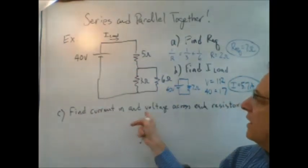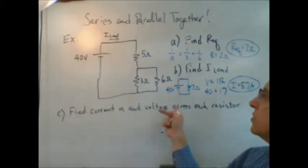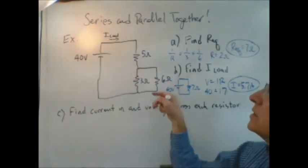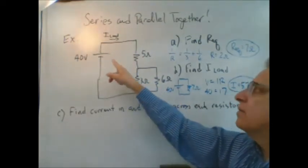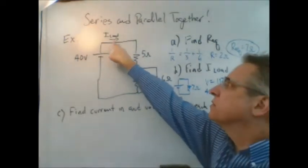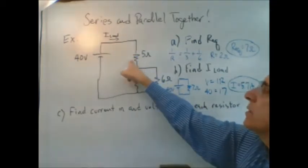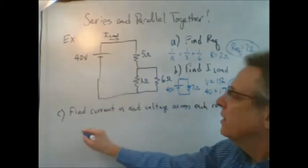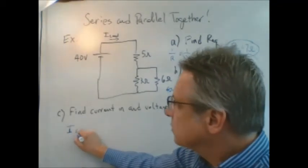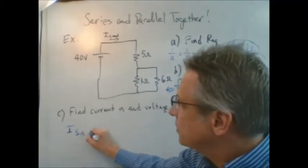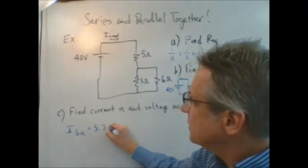So we will need to find now the current in and the voltage across each of these resistors. We start out with the easiest thing to find. If there's 5.7 amps going through this resistor, then that's one of the things we had to find. The current in the five-ohm resistor is equal to 5.7 amps.